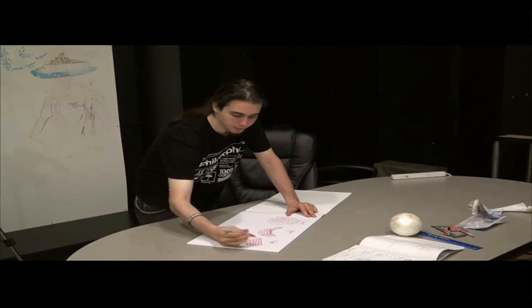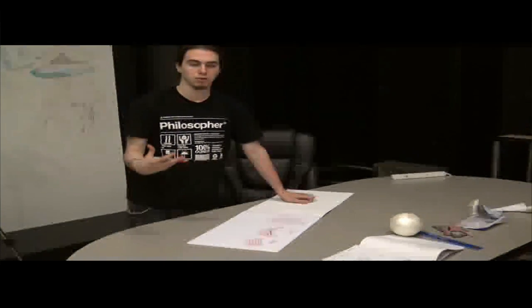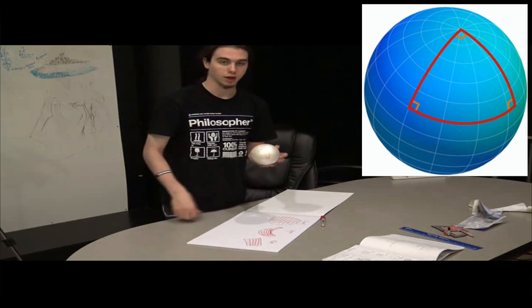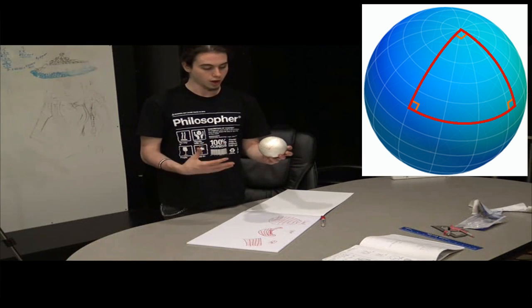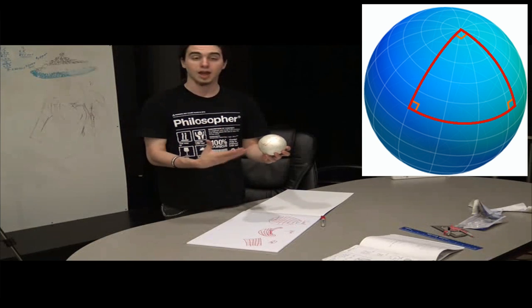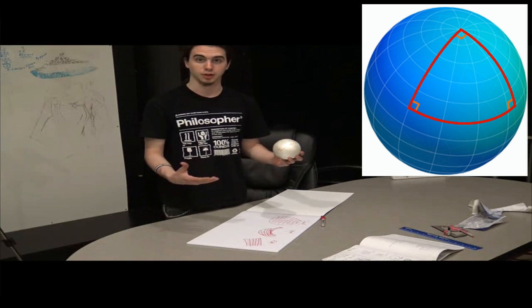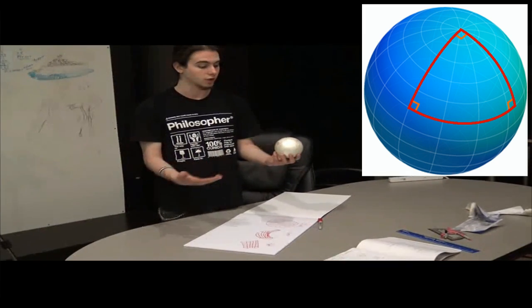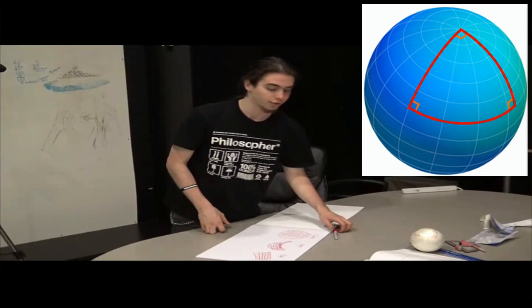When it comes to determining the shape of the universe, what we need to do is draw triangles. On this sphere I have drawn a triangle, but on a spherical shape a triangle can have three right angles. In Euclidean geometry, all the angles of a triangle have to add up to 180. So we're going to draw some triangles to try to figure out what the universe looks like.